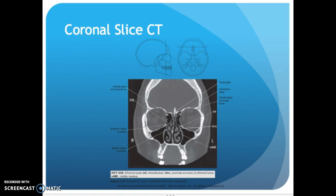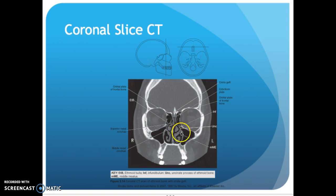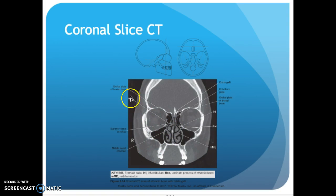Here is the coronal slice in CT. You have your crista galli sticking up there, your cribriform plate just below that, your infundibulum, your uncinate, and your middle meatus, your middle nasal concha, and superior nasal concha. Ethmoid bulla — it's round — and your cribriform plate, orbital plates across the top.